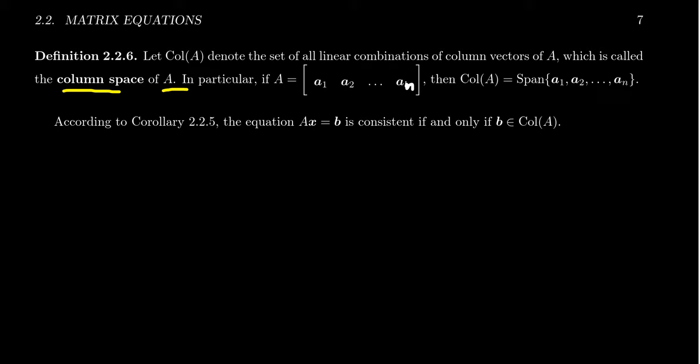For example, if A has the form where the first column is A1, the second column vector is A2, up to the last column vector which is An, the set of linear combinations of some vectors is just what we call the span of those vectors. So the column space is just the span of the column vectors of a matrix A1, A2, up to An.